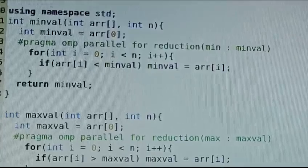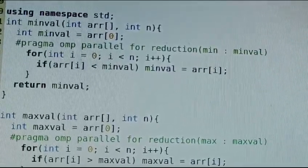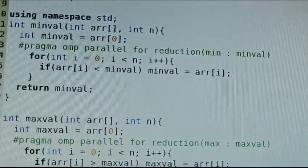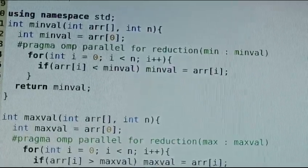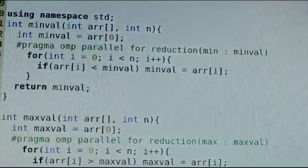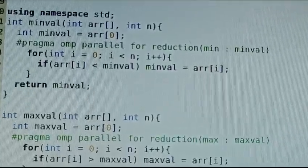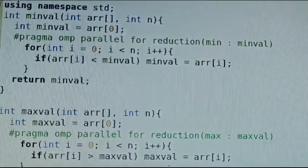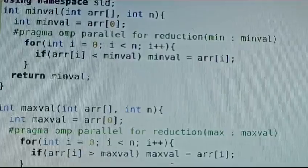Using namespace std. Next is the minimum function for finding minimum value minval which takes the integer array as first argument and n as size as second argument. The minval variable assigns to the first value, equal to arr[0].